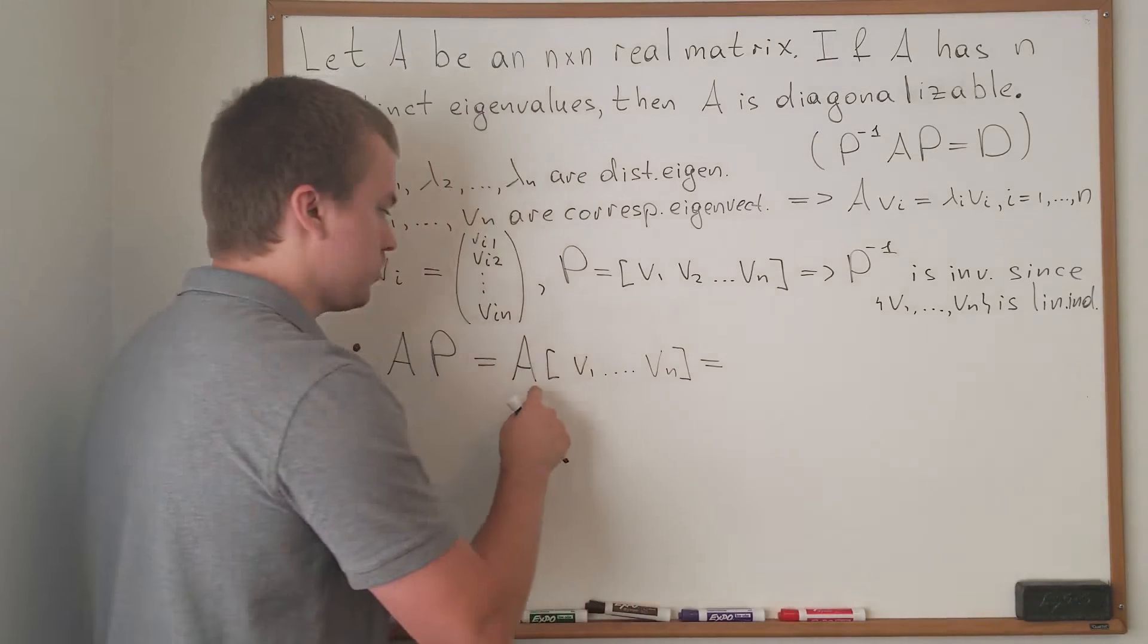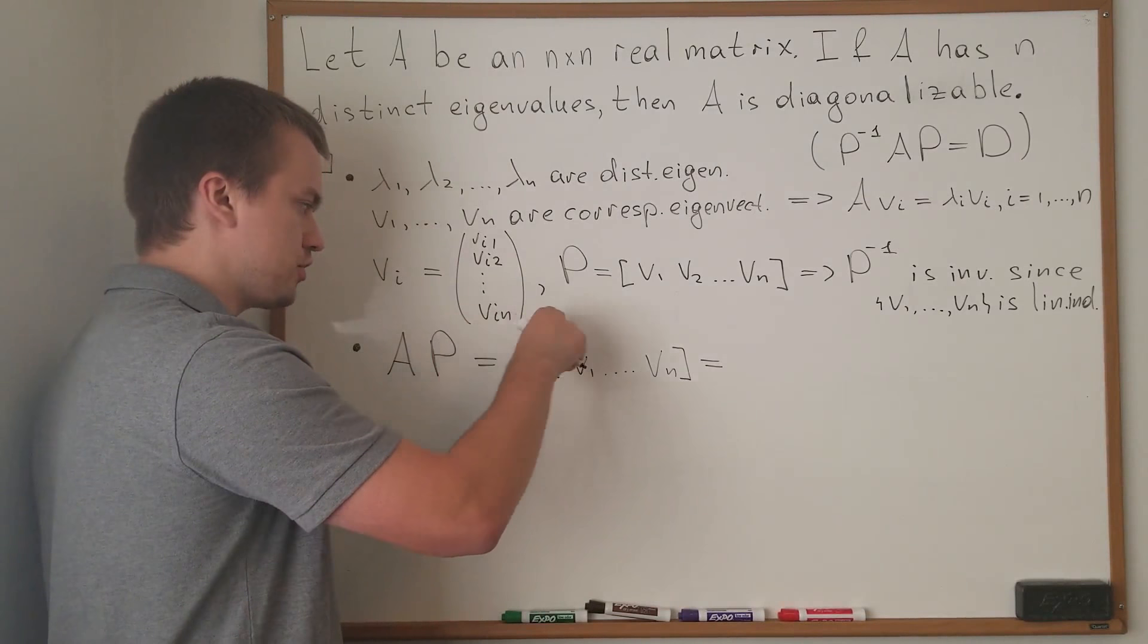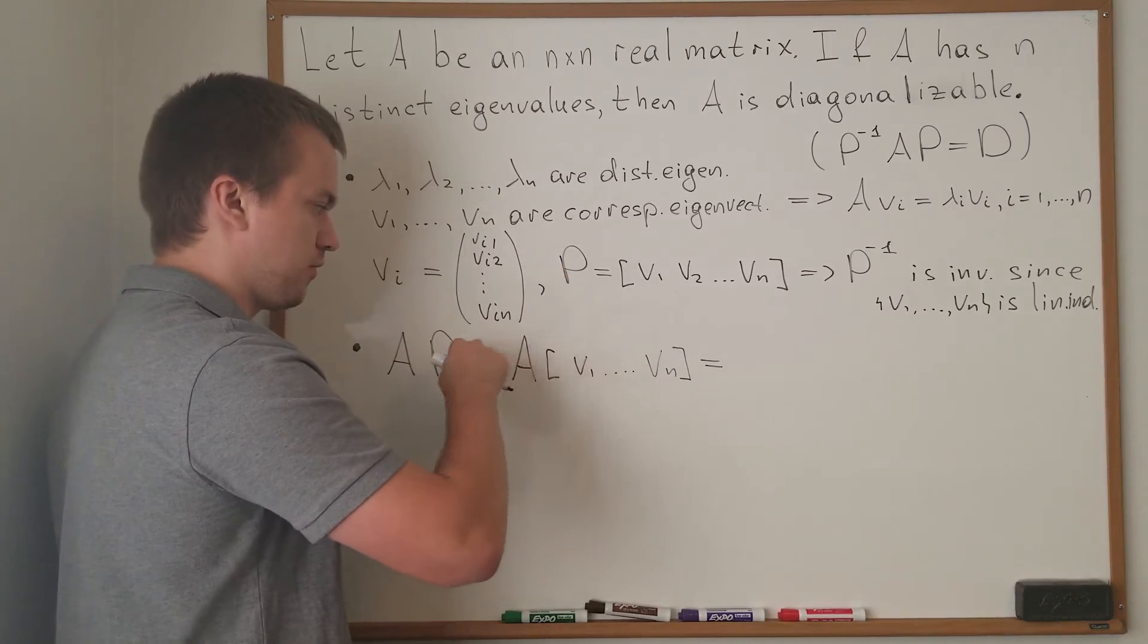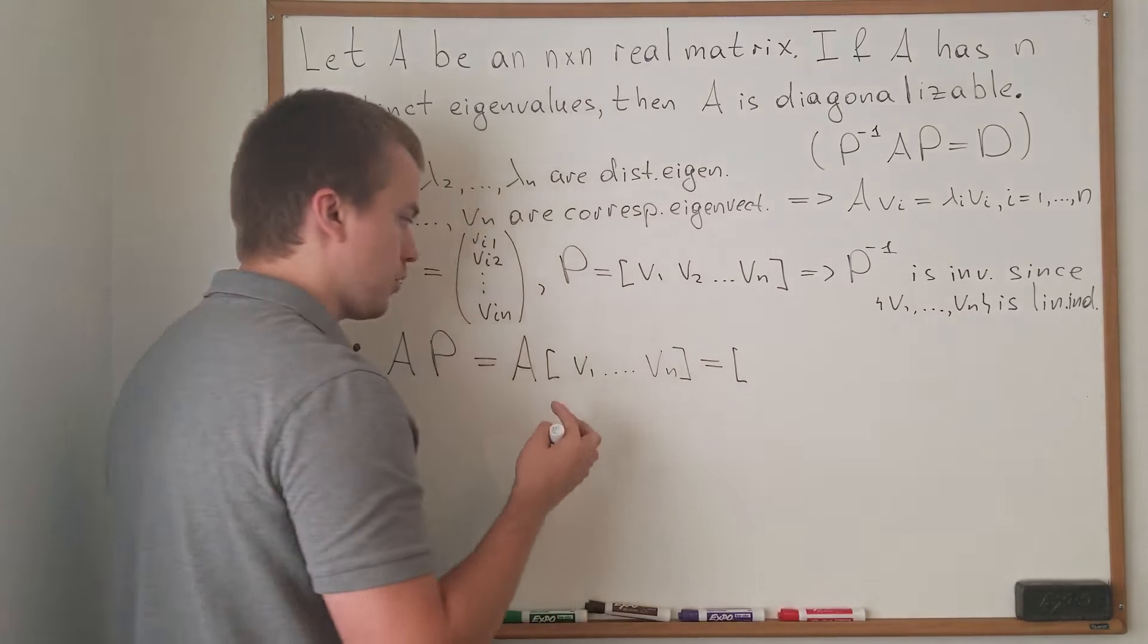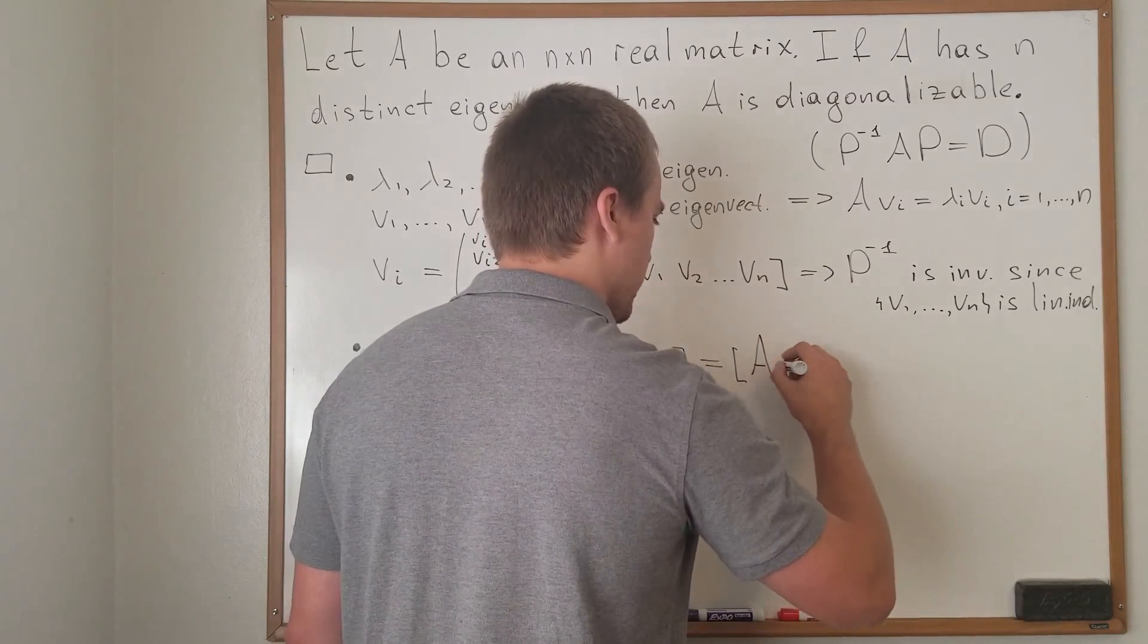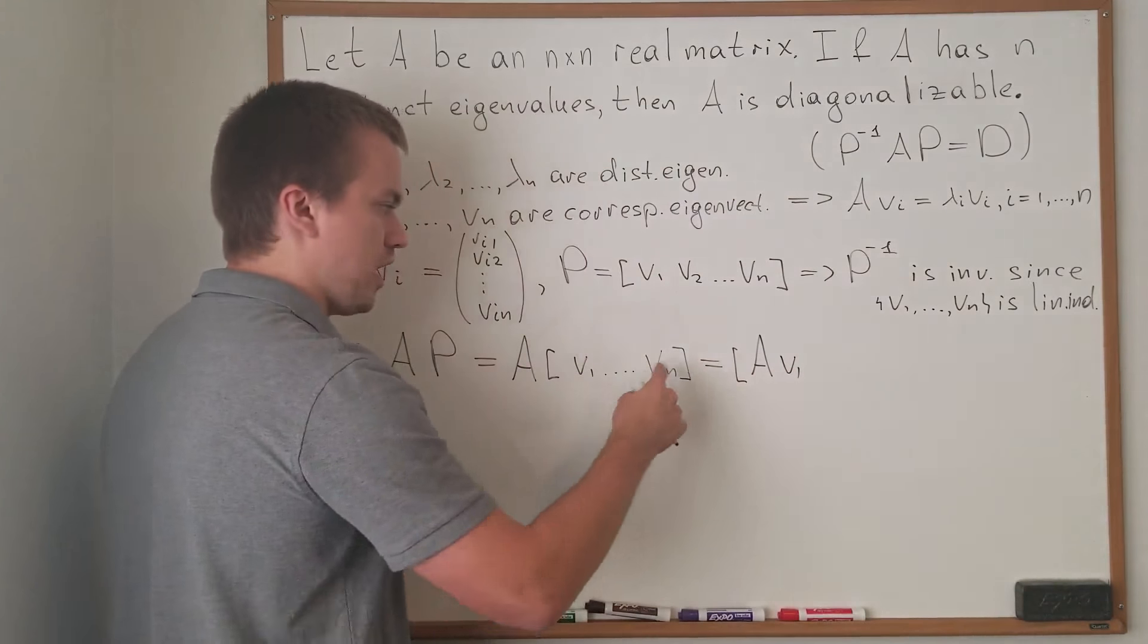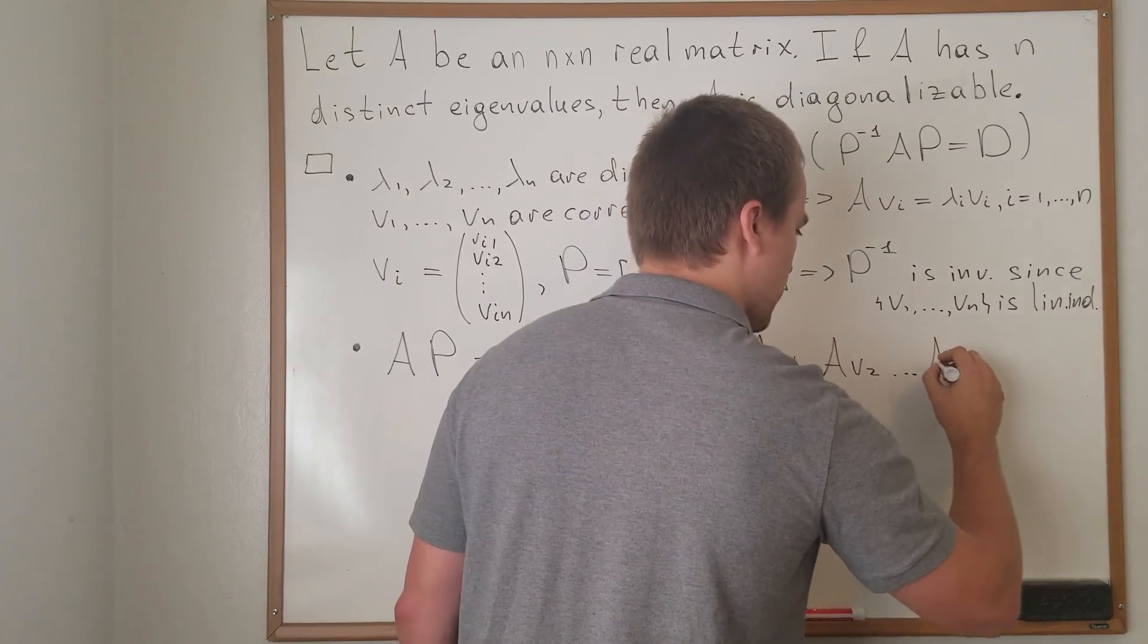Here I'm going to use matrix multiplication. So I'm going to multiply first row by first column, second row by first column. In the next video, I'm going to show this is actually true by using computation, but you can check that this is going to be equal to A V1, A V2, and A Vn.